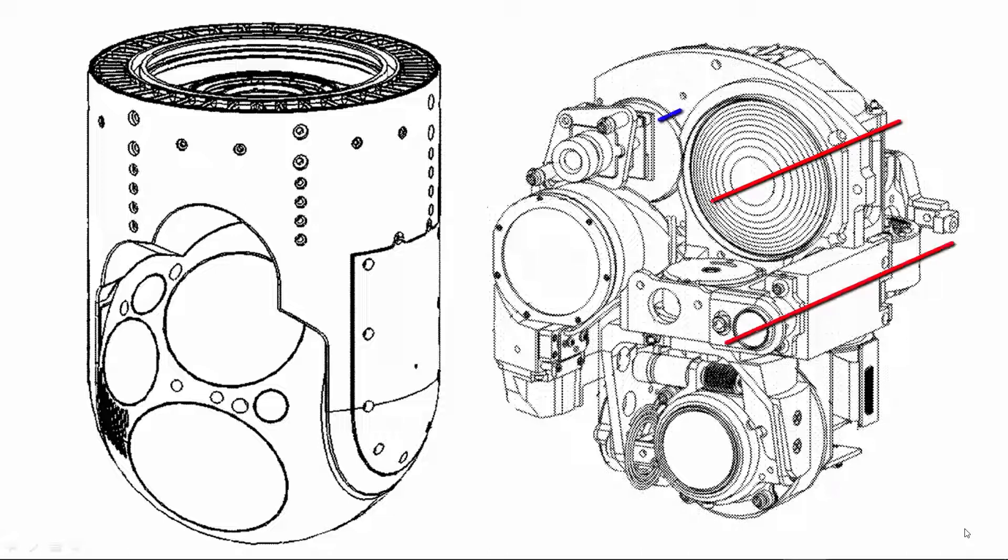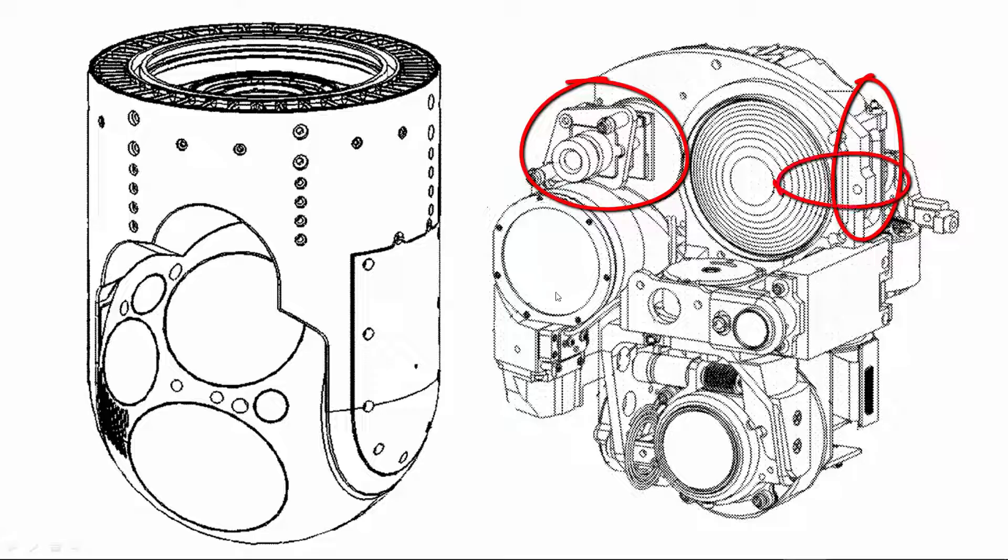The optical axes of the various sensors need to be aligned to each other, a process called bore siding. Kinematic mounting is used for a number of these mounts and adjustments.